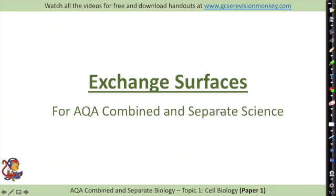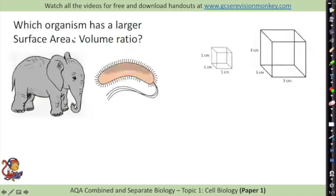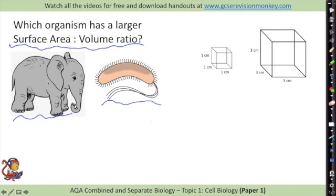The last topic is exchange surfaces. First we need to discuss why large organisms need exchange surfaces, and it's all to do with the surface area to volume ratio. The elephant may appear to have a larger surface area, but it's the ratio that's important. To calculate: the surface area of a 1cm cube is 1×1×6 = 6 cm², and its volume is 1 cm³, giving a ratio of 6:1. For a 3cm cube: surface area is 3×3×6 = 54 cm², volume is 3×3×3 = 27 cm³, giving a ratio of 54:27.